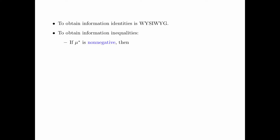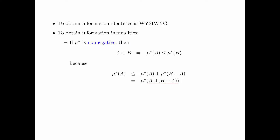First, if mu star is non-negative, then if a set A is a subset of a set B, then mu star of A is less than or equal to mu star of B. This is because mu star of A is less than mu star of A plus mu star of B minus A, because mu star is non-negative. Now A and B minus A are disjoint, and so by set additivity, this equals mu star of A union (B minus A), which is mu star of B. Therefore, we have shown that if A is a subset of B, then mu star A is less than or equal to mu star B.